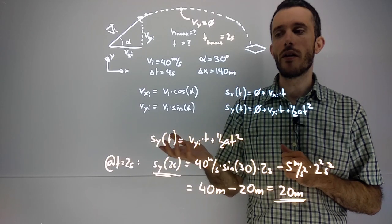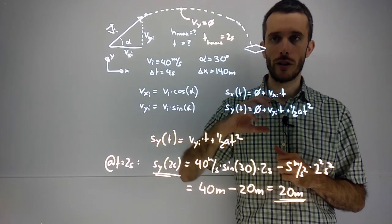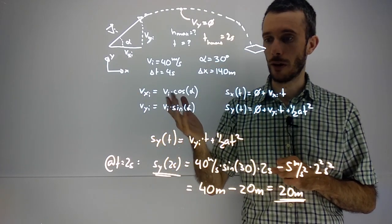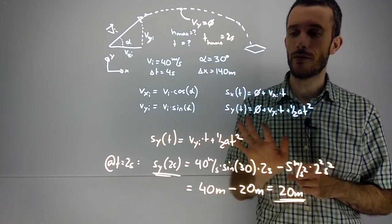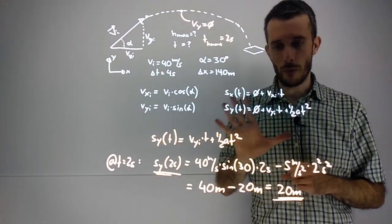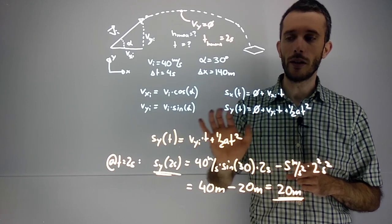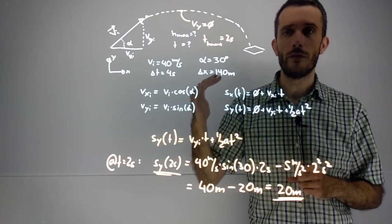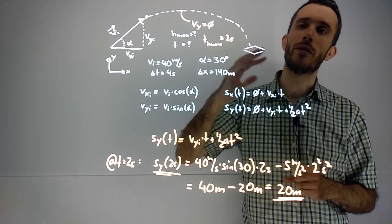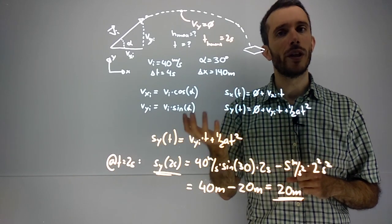As you've seen, often it's not necessary to use the range equation or the trajectory equation. The equations as a function of time, for many problems, are just enough. You plug in what you know in one direction, figure out the time, and use the time in the other direction to calculate whatever is needed.